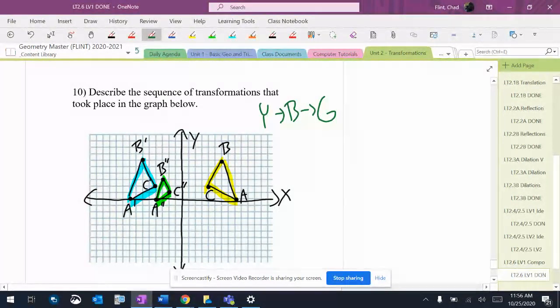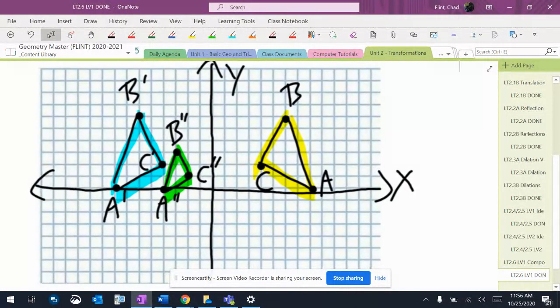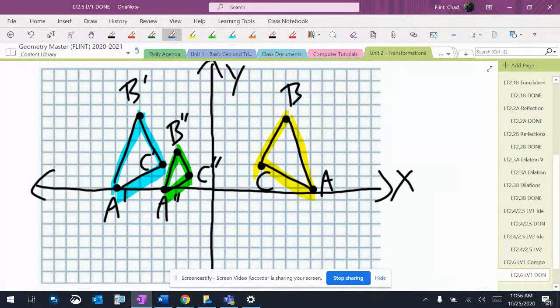Let's figure out what happened. So yellow to blue looks like a reflection to me. Now, is it the y-axis? Let's see. 1, 2, 3, 4, 5, 6. 1, 2, 3, 4, 5, 6. So it is the y-axis.